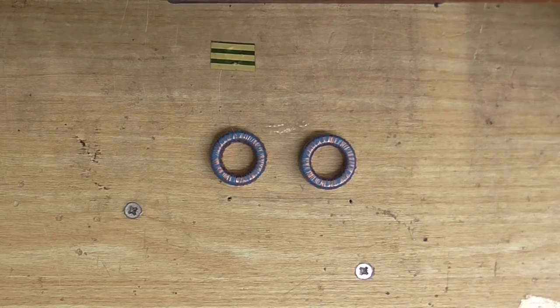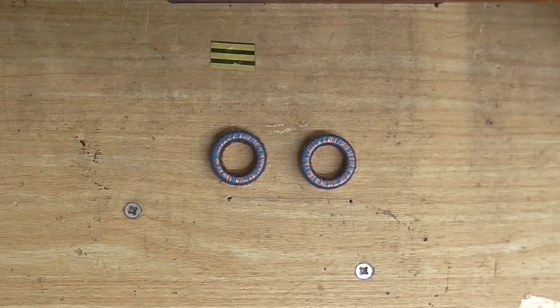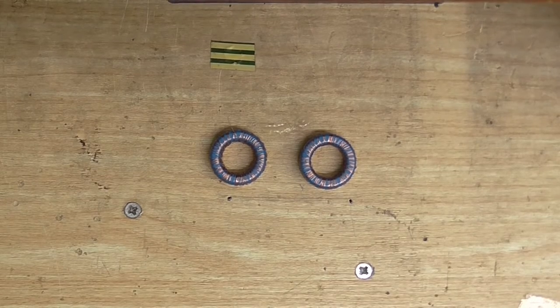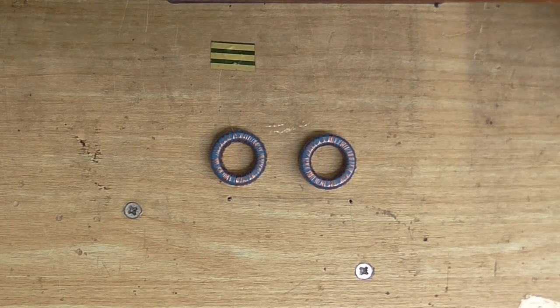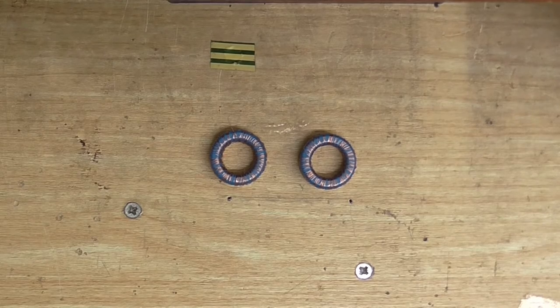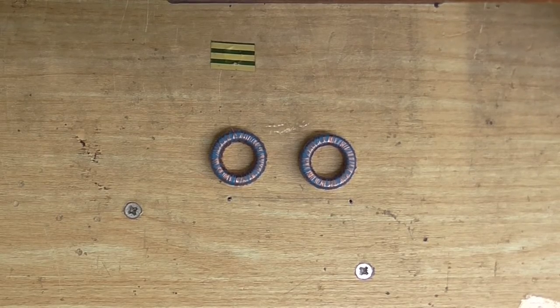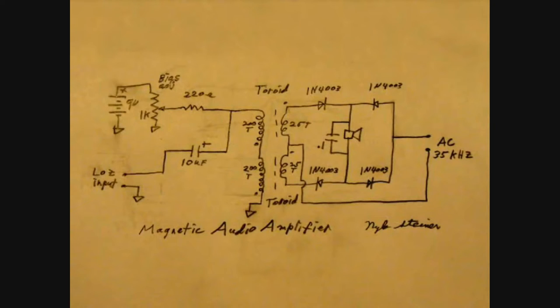You're probably wondering how I wound 200 turns on a toroid. Well, a lot of time and a lot of patience. But before I turn these into transformers, let's just take a look at the schematic that we're going to use. So this is the schematic. I did not design this, but this is what I'm going to replicate.